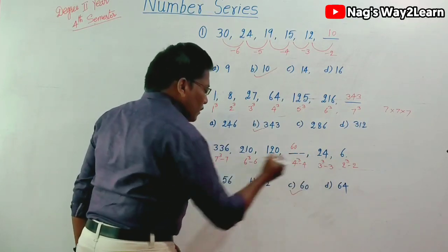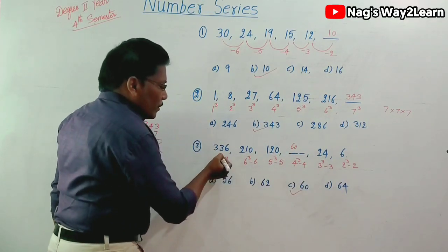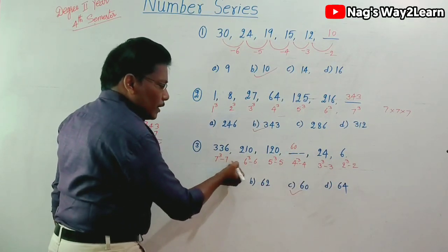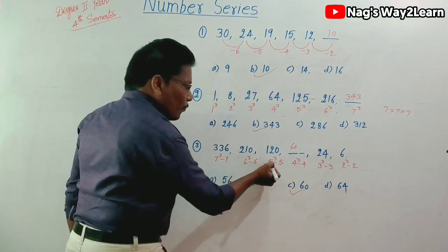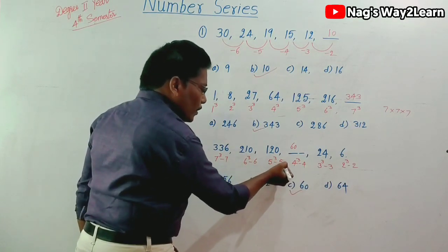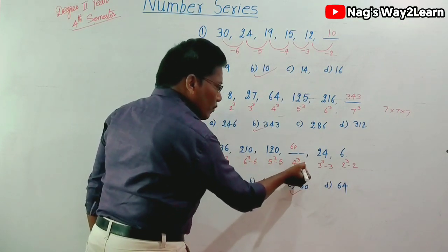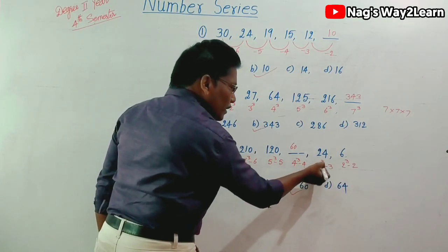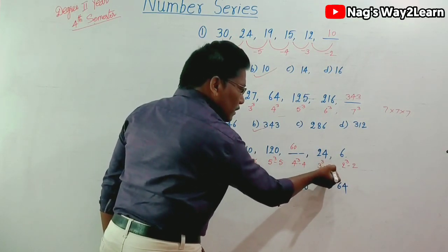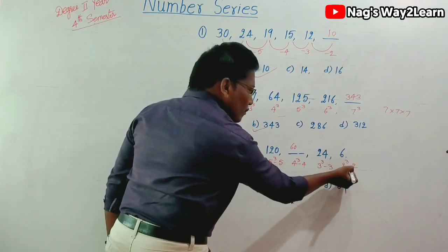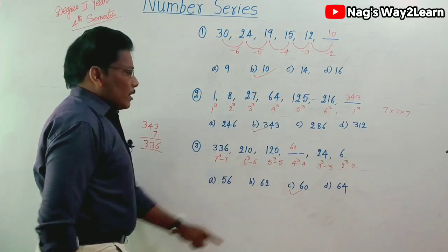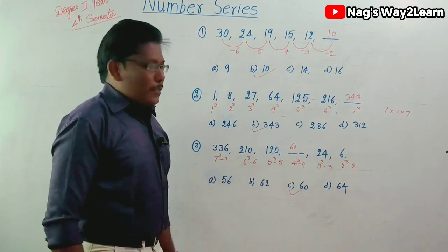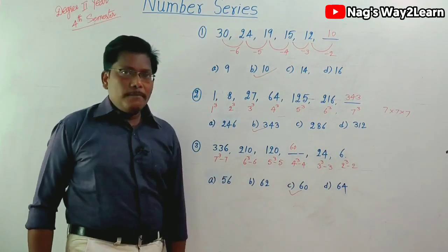You have to observe the pattern: 7³−7, 6³−6, 5³−5, 4³−4, 3³−3, 2³−2. So the answer is 60.